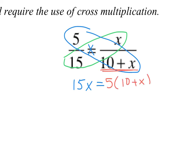You need to put this expression right here in parentheses because you are distributing your 5 to both terms. So now that I distribute, I have 5 times 10 and 5 times x. So I have 15x equals 5 times 10 is 50 plus 5x.